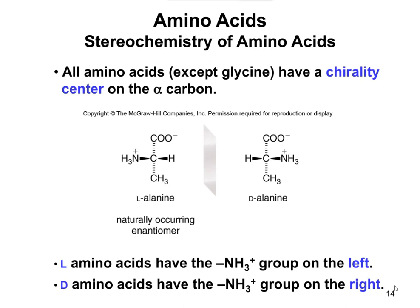Another important feature of amino acids besides acid-base chemistry is their stereochemistry. We started off talking about stereochemistry with cis-trans isomers, and then in the sugar chapter we talked about D versus L sugars. Amino acids have that same designation of D versus L, where you line up your carbons the same way we did with sugars. For sugars, the OH furthest from the carbonyl group determines whether it's D or L.